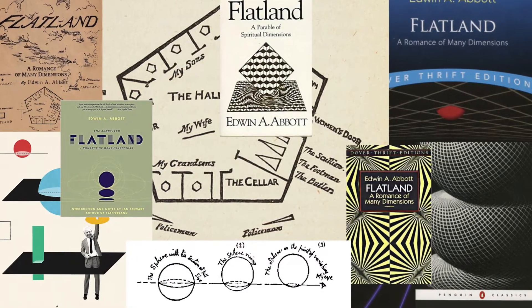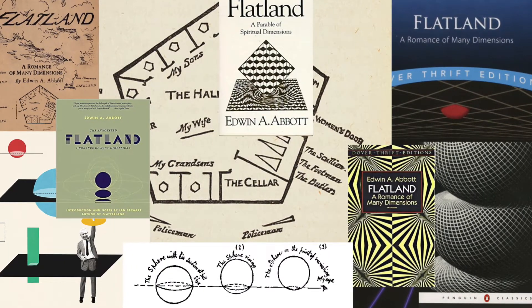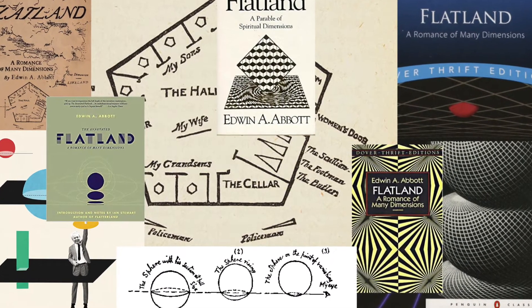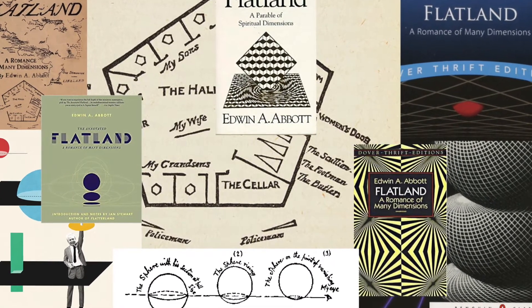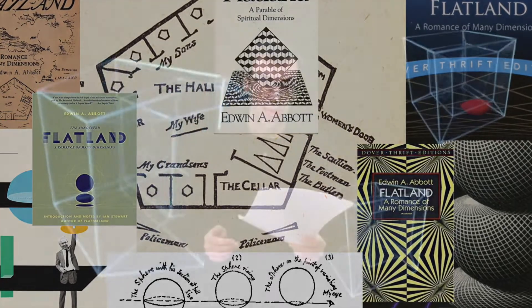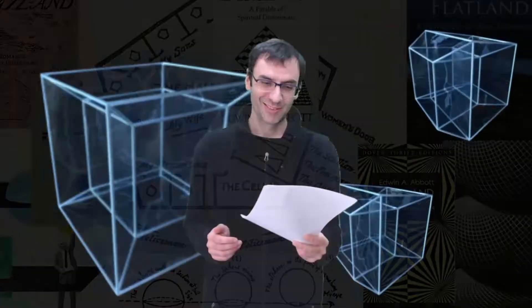The first book I want to introduce is called Flatland. Flatland was first published in 1884 by a guy named Edwin Abbott. When he first published the book he authored it under the name A Square, which actually goes along with the theme of the book.